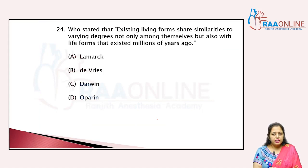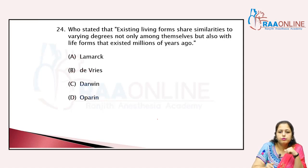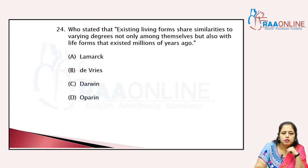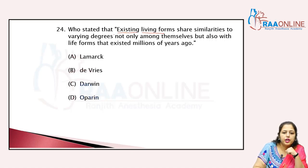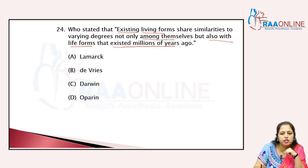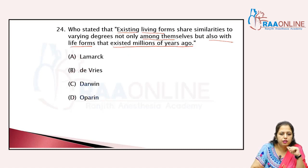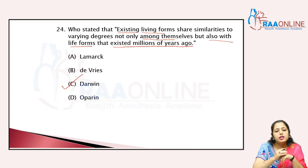Who stated that existing living forms share similarities to varying degrees, not only among themselves, but also with life forms existing millions of years ago? That is the statement of Darwin. So the answer is C.